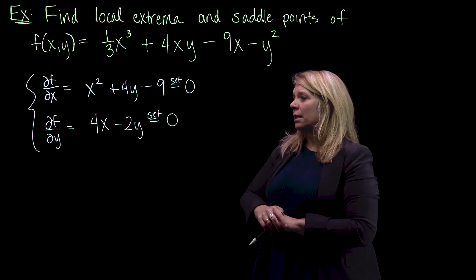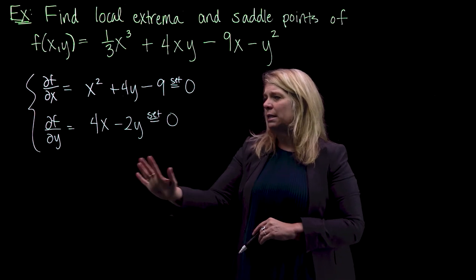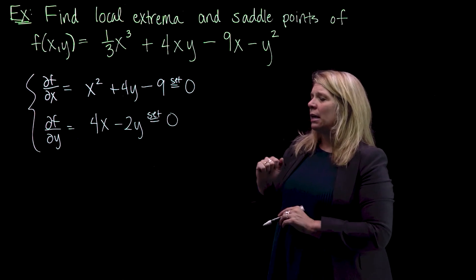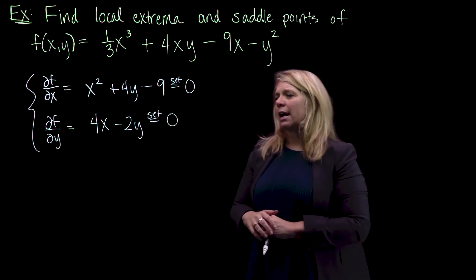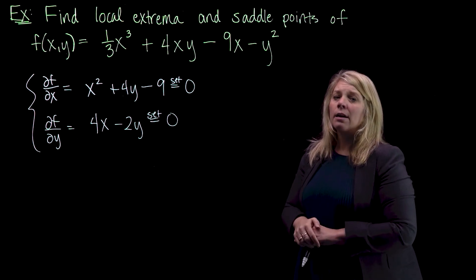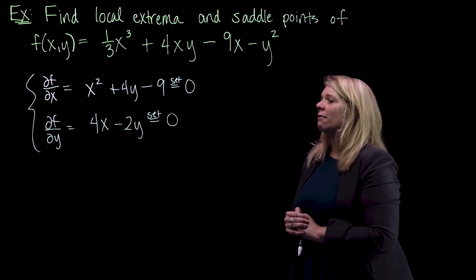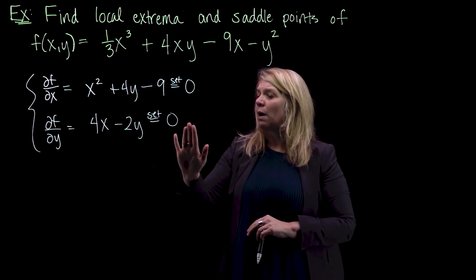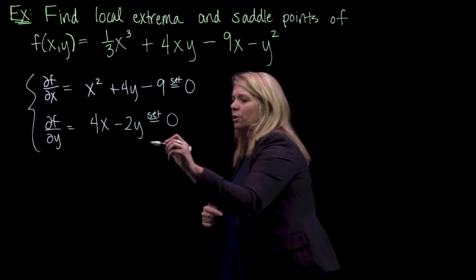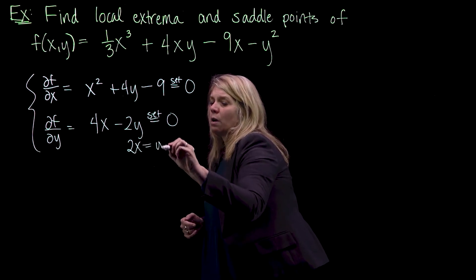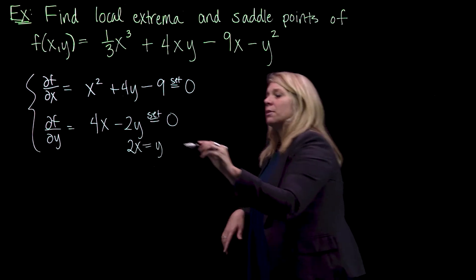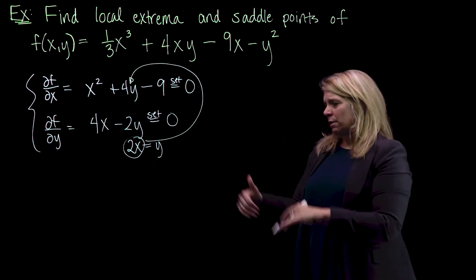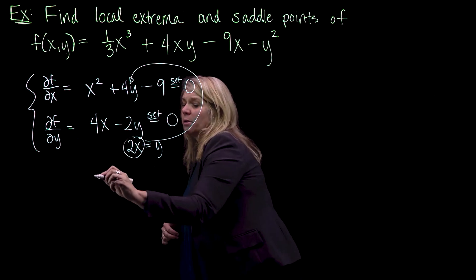I would use substitution on this one. I would notice that the second equation is pretty easy to solve for x or y, and then substitute into the first equation. You want to be careful that you don't make sign errors or coefficient errors as you do this, so if you need to write out more algebra than I'm going to write out here, please do that. So if I take the second equation and solve for y — adding 2y to both sides and dividing by 2 — I get y equals 2x, and then I'm going to substitute into the first equation to eliminate a variable.